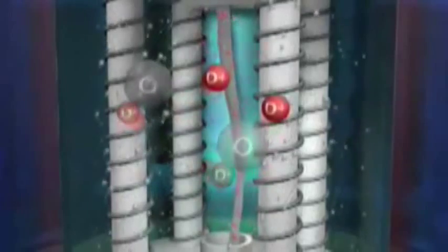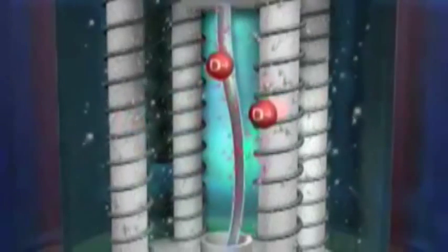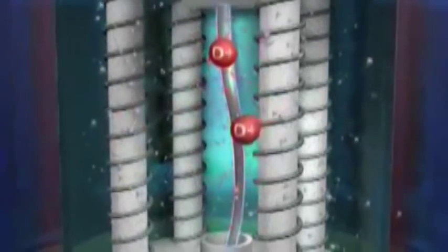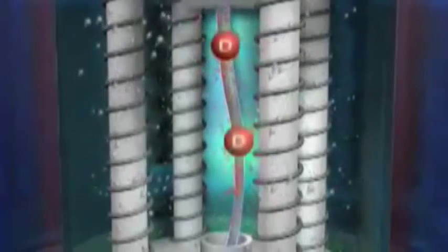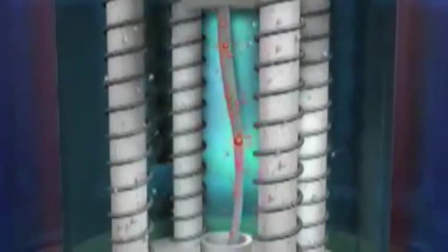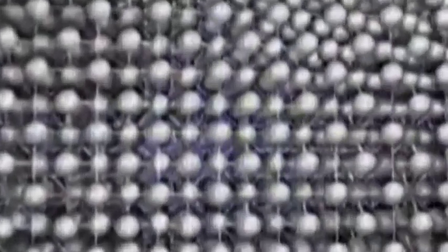Meanwhile, the D positive ions are attracted to the negatively charged palladium cathode, where they quickly find an electron on the surface of the cathode to neutralize their charge. This cathode is made of palladium atoms arranged in a face-centred cubic lattice.